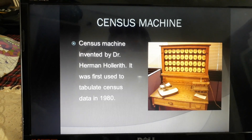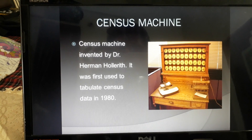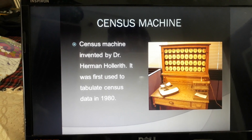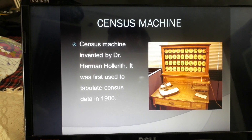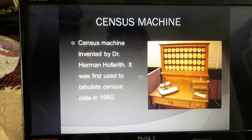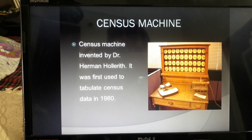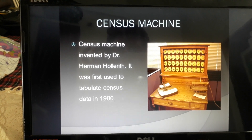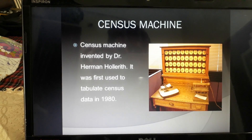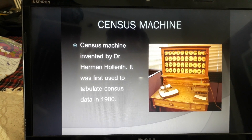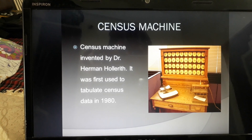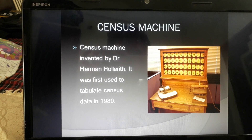The next device is the Census Machine, invented by Dr. Herman Hollerith. It was first used to tabulate census data in 1890. This machine was built specifically for conducting population census — to tabulate and record census data.